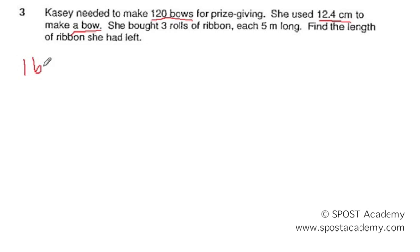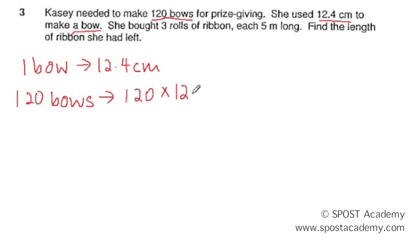Since 1 bow is 12.4 cm, therefore 120 bows will need a total of 120 times 12.4 cm, and that will give us 1,488 cm.